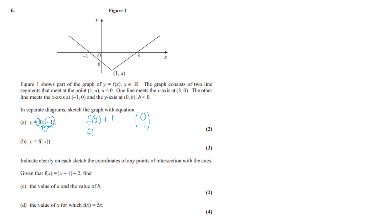When we have f(x+1), the transformation is inside, so it affects the x coordinates and the graph shifts minus 1 in x — everything goes 1 to the left. So the 3 is going to go 1 to the left, minus 1 goes 1 to the left, and the coordinate (1, a) — where a is below 0 — shifts left so it now sits on the y-axis.